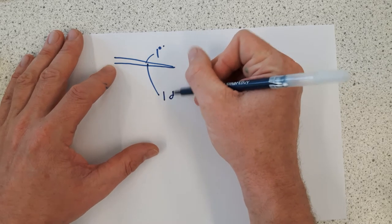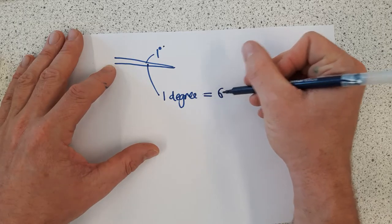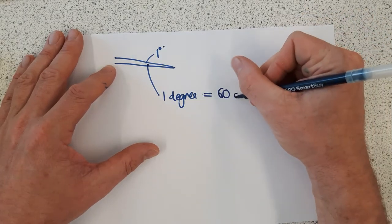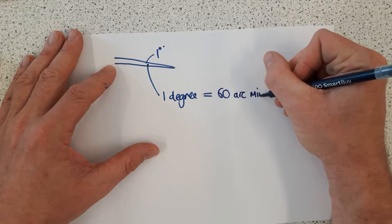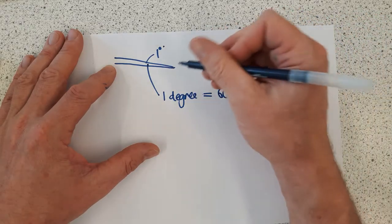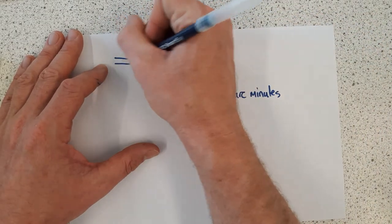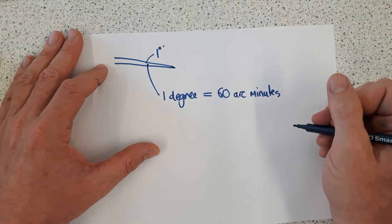One degree can be divided into 60 minutes of arc, or arc minutes. We don't do fractions of degrees, we do arc minutes. In one degree, there are 60 arc minutes. Imagine dividing up one degree into 60 slices, each one is one arc minute.